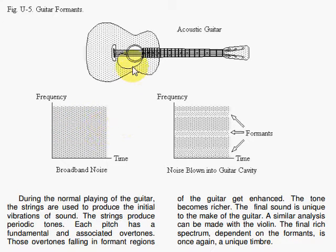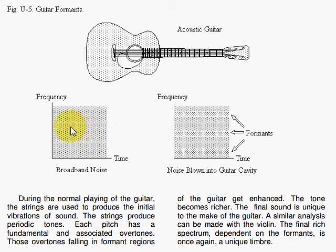If we take an instrument like the guitar, it has a cavity, it has wood, it has structure that will emphasize certain harmonics and frequencies when played because of resonance. One way to find these regions is to gently blow white noise into the guitar and see what comes out. You'll have a spectrogram of white noise, but with certain frequencies emphasized. These bands of emphasized frequencies are your formants or your formant regions — that's an experimental way to find where the regions get emphasized.